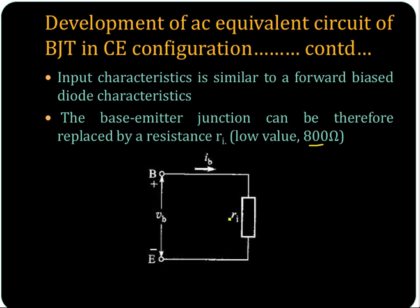So input resistance is very small. This is the base current to the base. VB is the base voltage and IB is the input current that is flowing into the transistor.